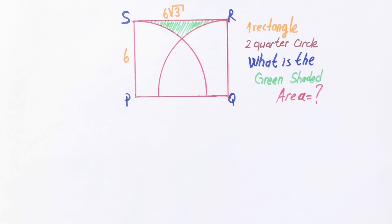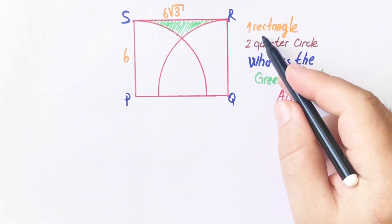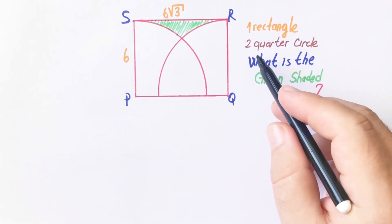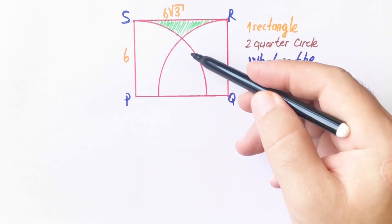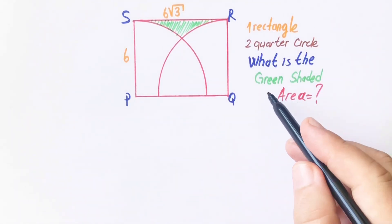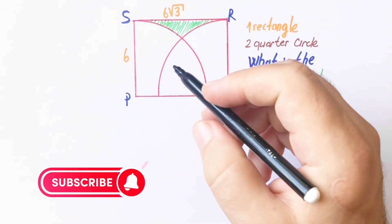Hello everyone, in this video we will calculate the green shaded area. We have one rectangle and two quarter circles, and the green shaded area is asked.